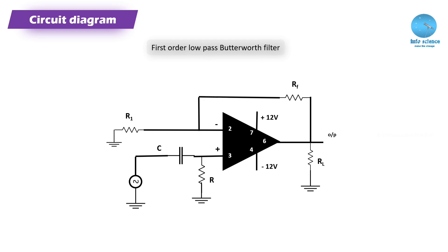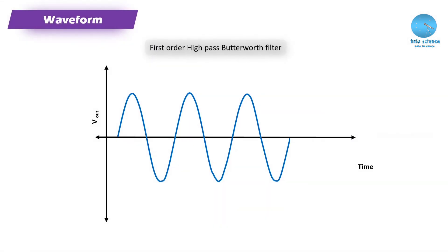We choose a capacitor value of 0.01 µF, and in the function generator the input voltage is set to 1.0 V. We will explain the waveform — the first order high pass filter input and output sine wave.